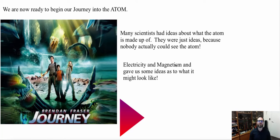In this video lesson we are going to begin our journey into the atom. Many scientists had ideas about what the atom is made of, but they were just ideas because nobody could actually see the atom. We're going to learn exactly how magnetism and electricity gave us some ideas on what an atom may look like. By the end of this video you should be able to use your understanding of electricity and magnetism from previous lessons and apply it to help us understand more about an atom.